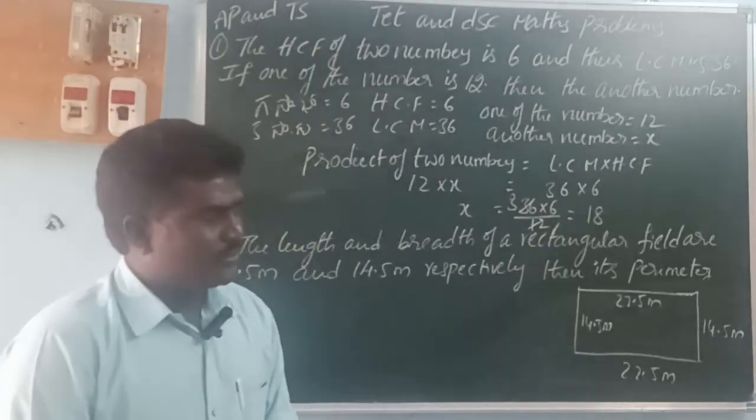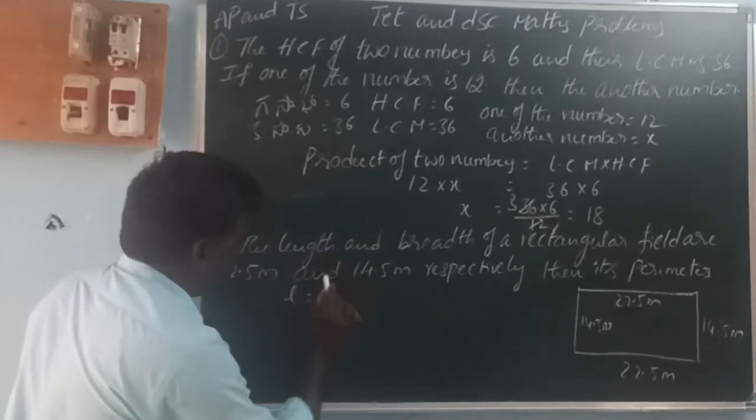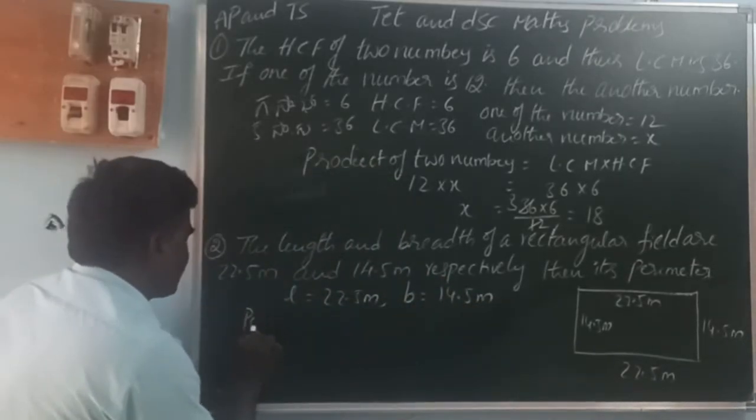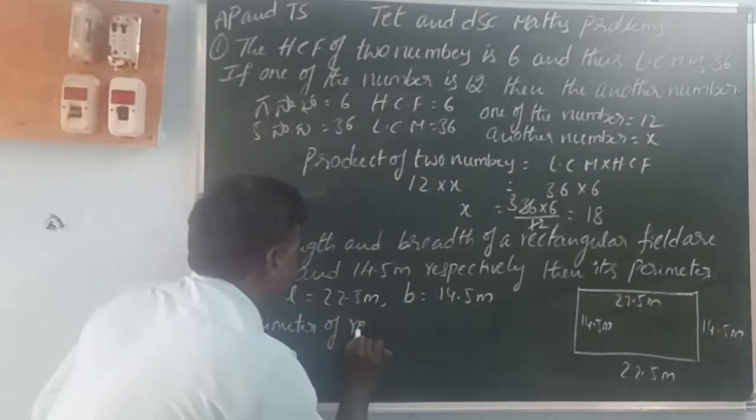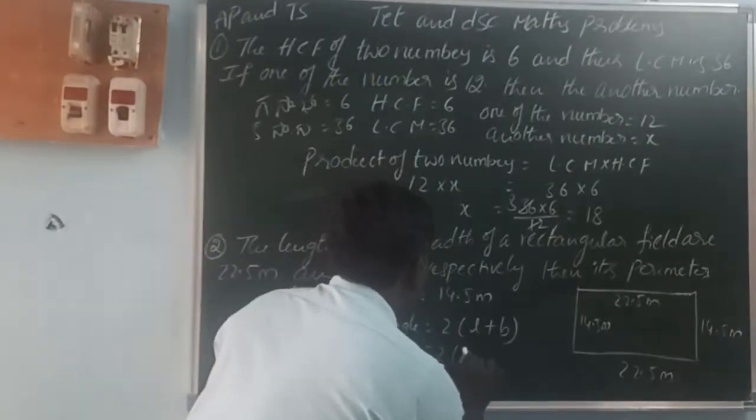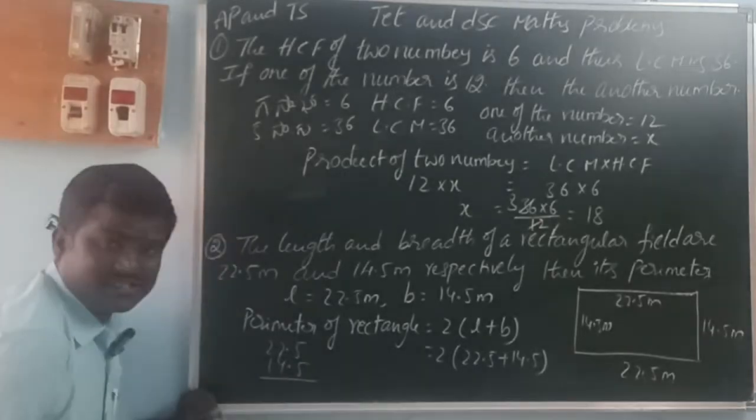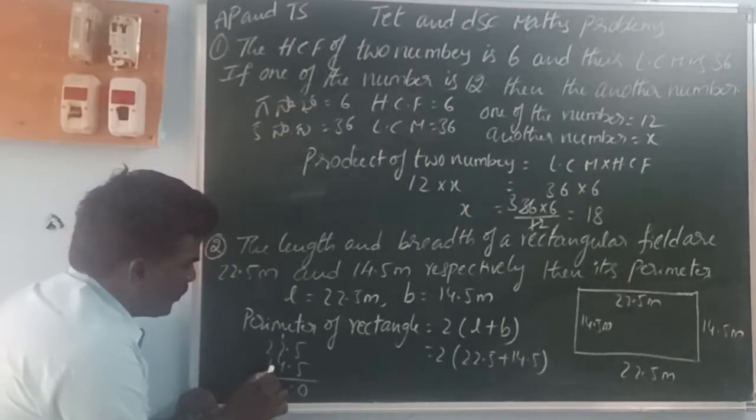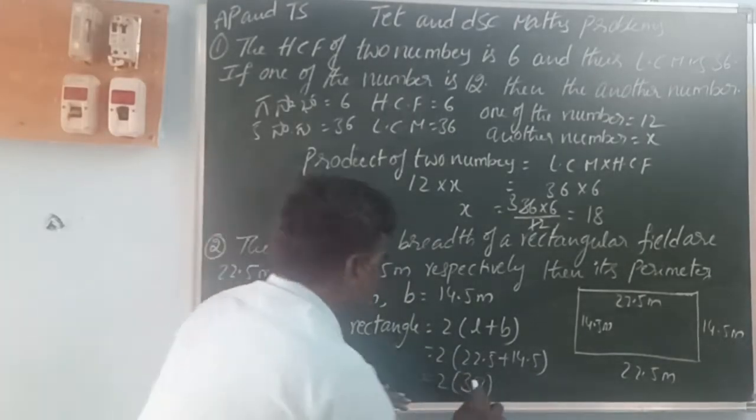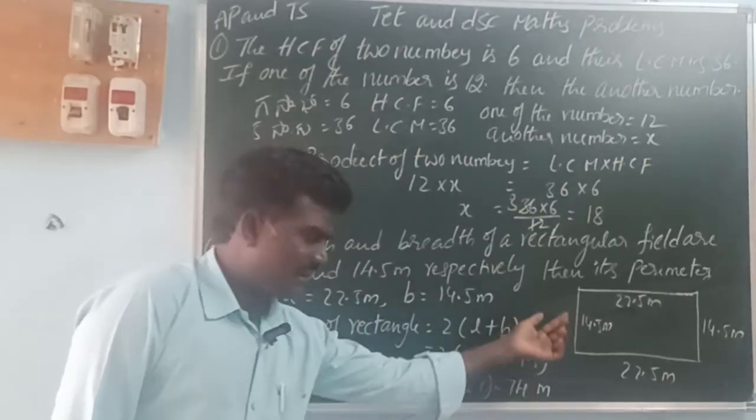Perimeter of rectangle formula is 2 times L plus B. That is 2 times 22.5 plus 14.5. 22.5 plus 14.5 equals 37. So 2 times 37 equals 74 meters. The perimeter of rectangle is 74 meters.